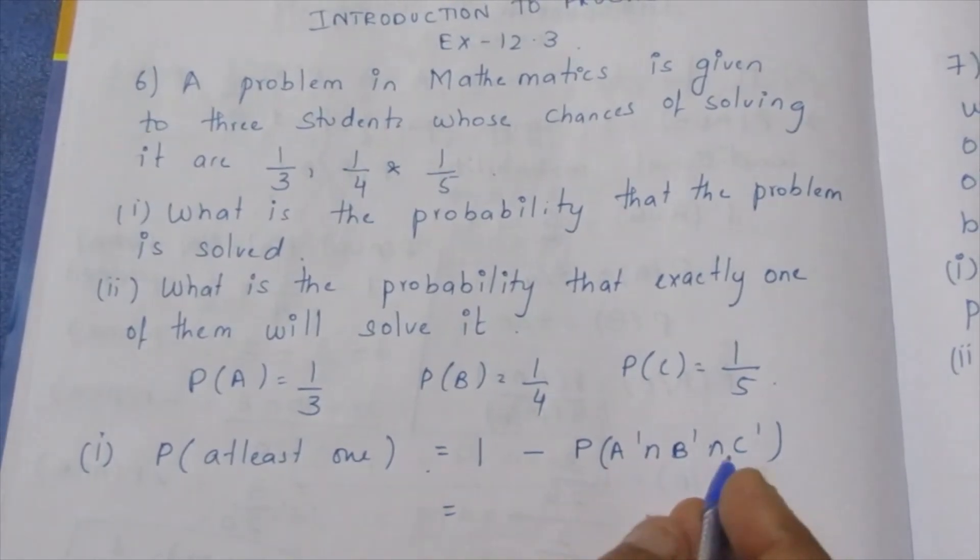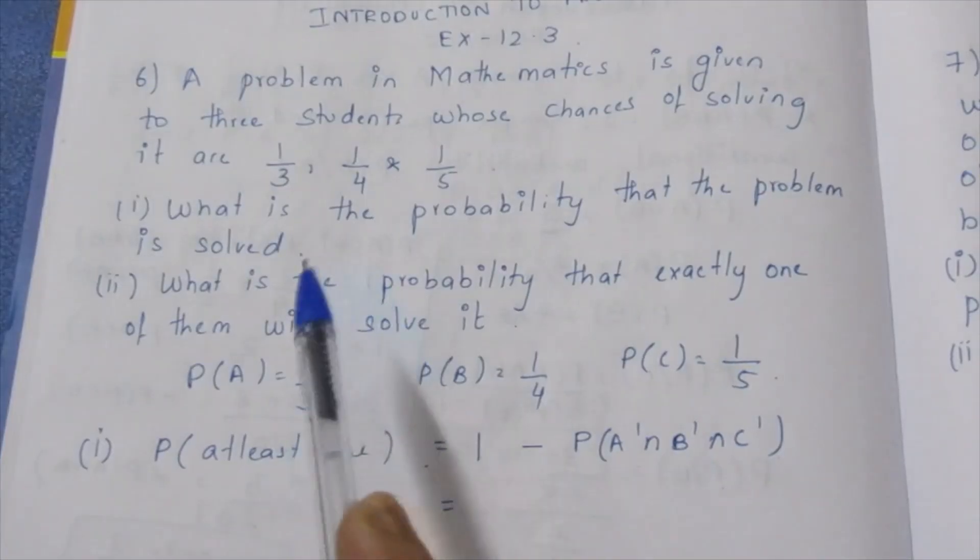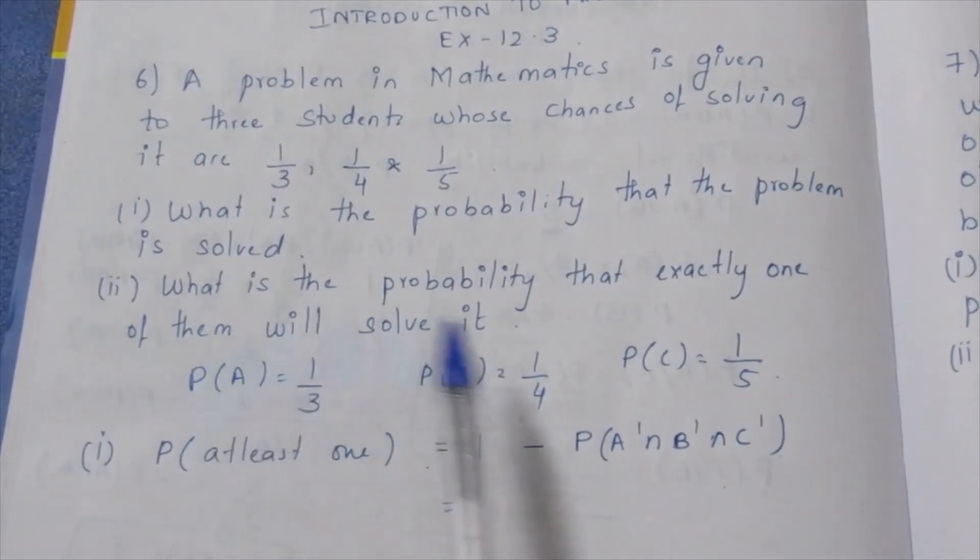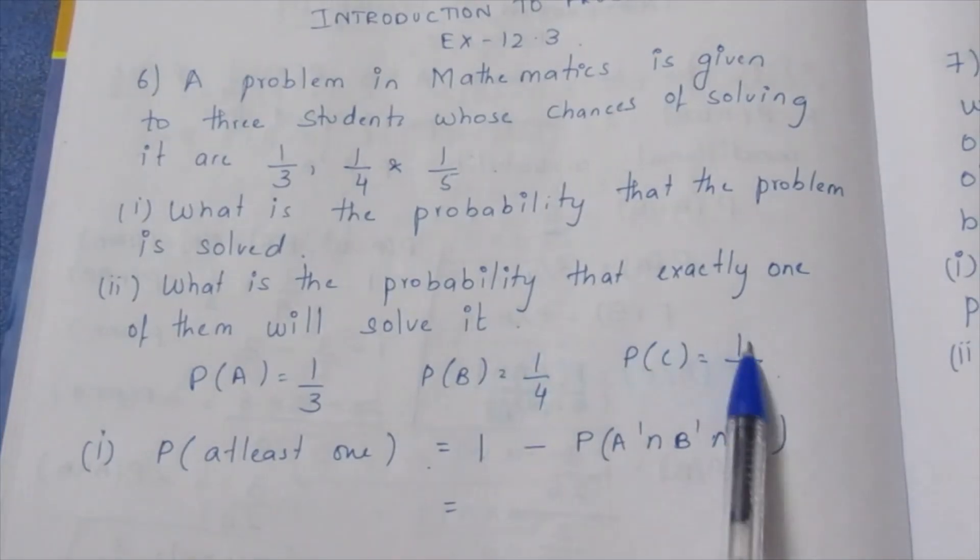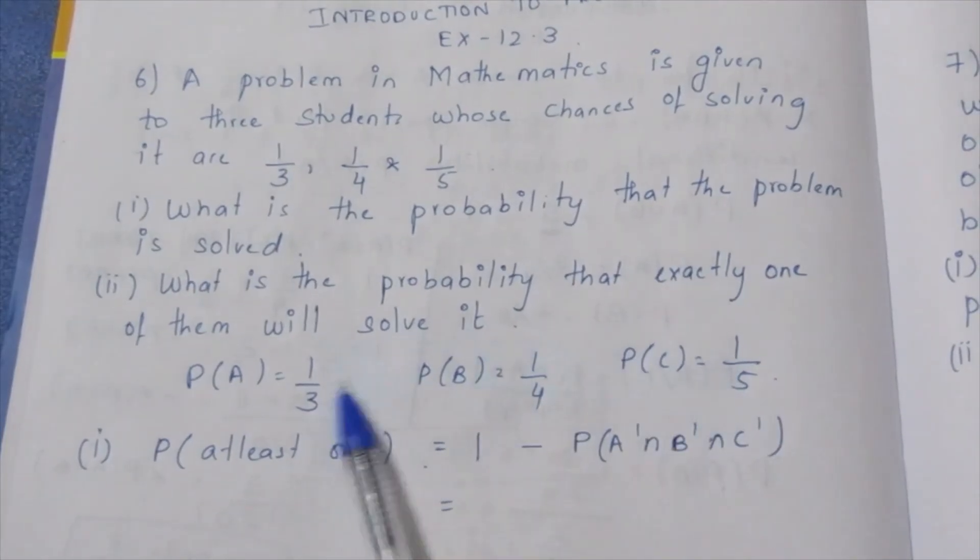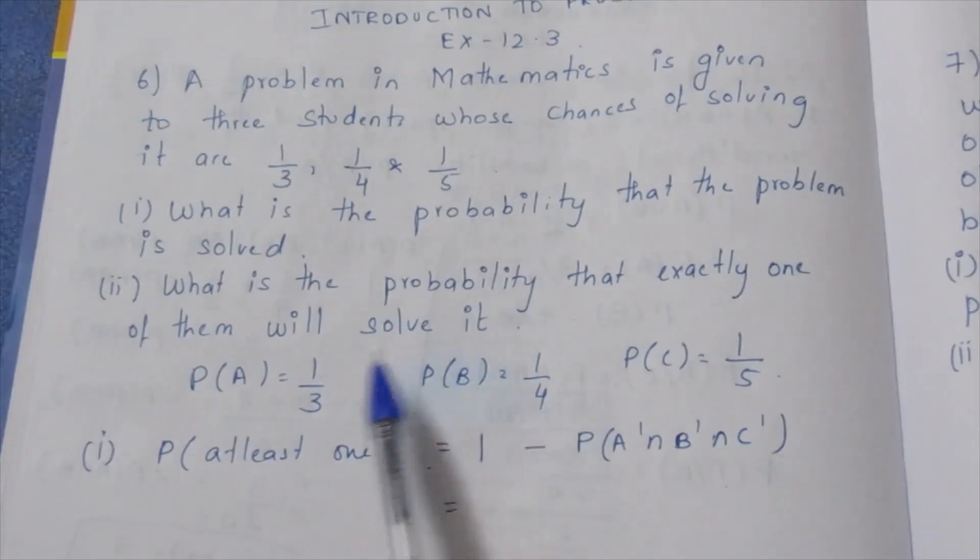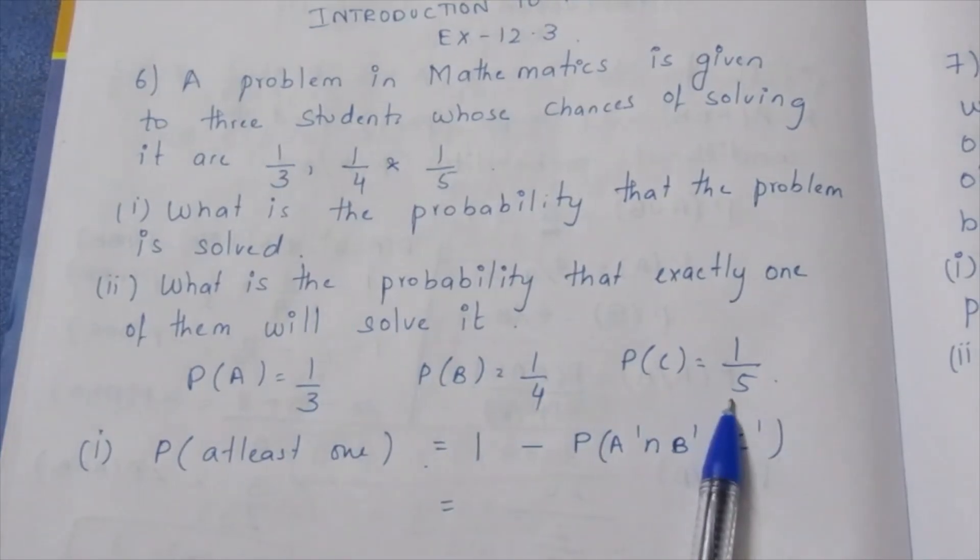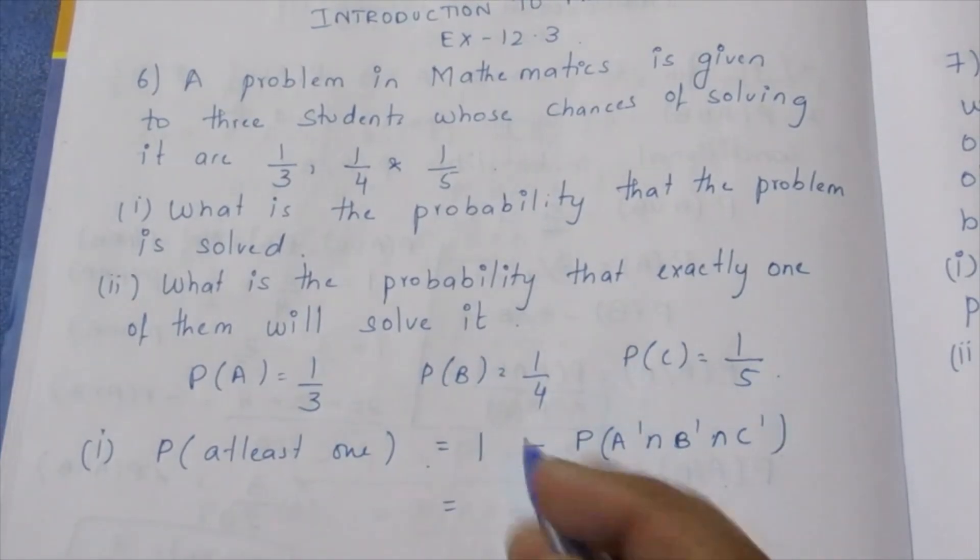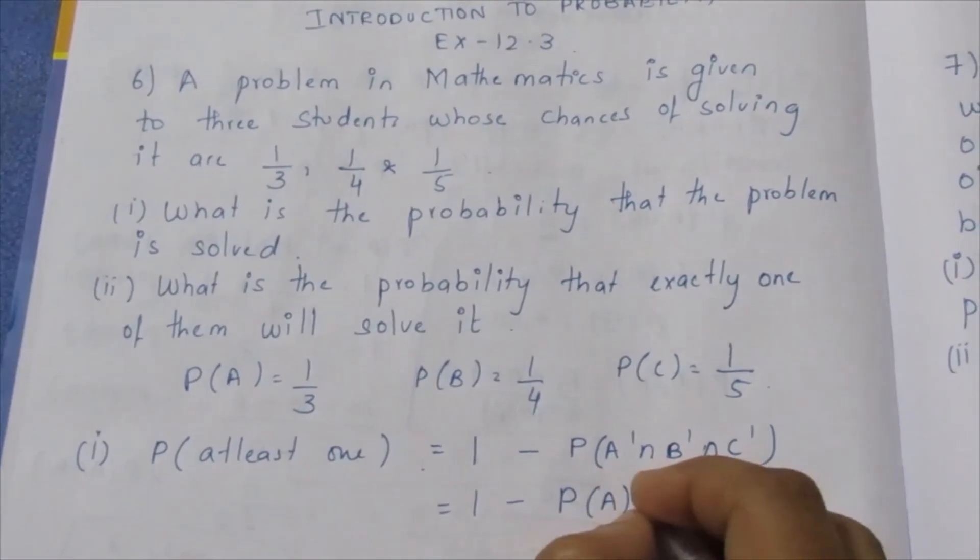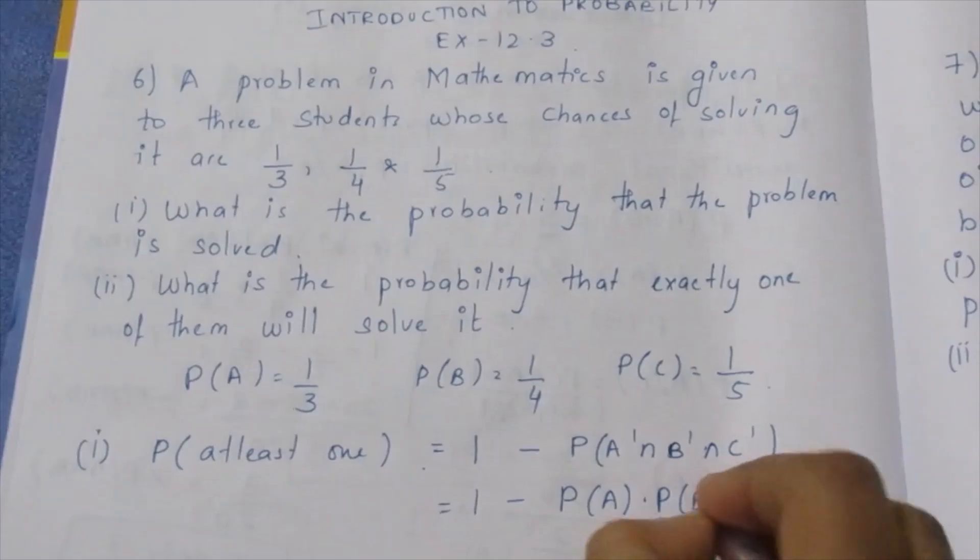How does this intersection get? This is an independent event. So this one is the same. If you solve this, if you solve that, so how do you solve this? P of A into P of B into P of C.